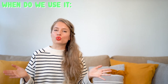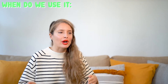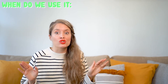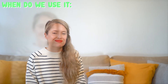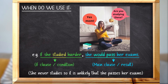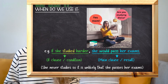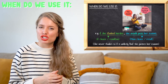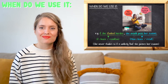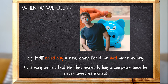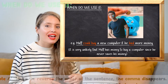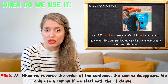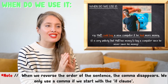Those last examples were a bit wild, but we can also use the second conditional with more regular, everyday situations. For example: 'If she studied harder, she would pass her exams' — but she never studies, so it's unlikely she passes. Or: 'Matt could buy a new computer if he had more money' — but Matt never saves, so he never has money and cannot buy a computer. These situations are also unlikely.